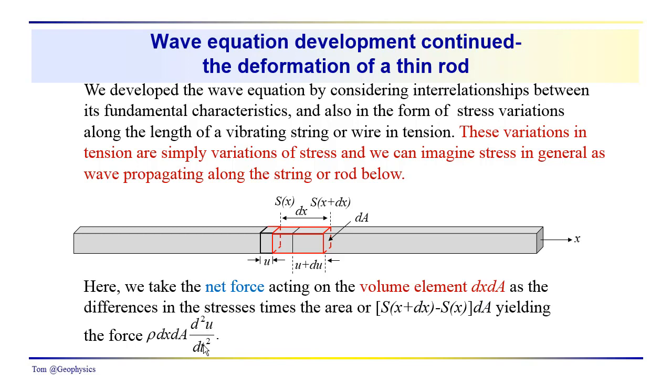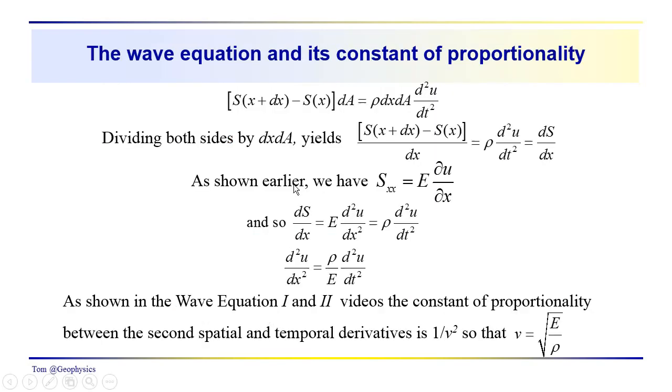If we look at that relationship, we're setting an equivalence between those two terms. We have [S(x+dx) - S(x)] times the surface area giving us a force equal to the mass times the acceleration, or ρ·dx·dA times the acceleration. Then we're dividing both sides by dx·dA, which gives us [S(x+dx) - S(x)]/dx.